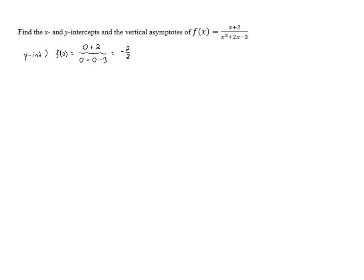Now to find the x-intercepts and the vertical asymptotes, we need to factor the numerator and denominator. The numerator is prime, so we can't factor it further, but the denominator factors into (x+3)(x-1) using the unfoiling method.